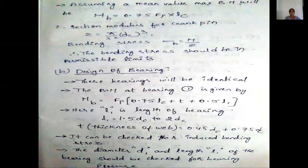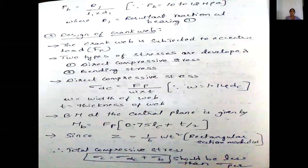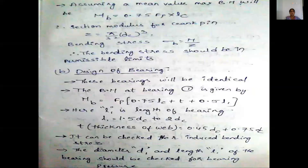Next, you find the design of the bearing. These bearings will be identical and the bending moment at bearing 1 is given by Mb equal to Fp into 0.75 Lc plus d plus 0.5 L1, where L1 is the length of the bearing and L1 is equal to 1.5 dc to 2 dc. The thickness of the web is equal to 0.45 dc to 0.75 dc. You can check for induced bearing and find the diameter D1 and length L1. Bearing pressure Pb is equal to R1 by L1 into D1.